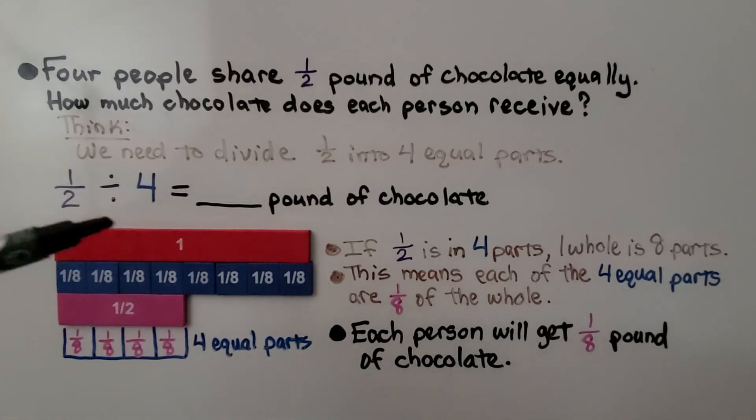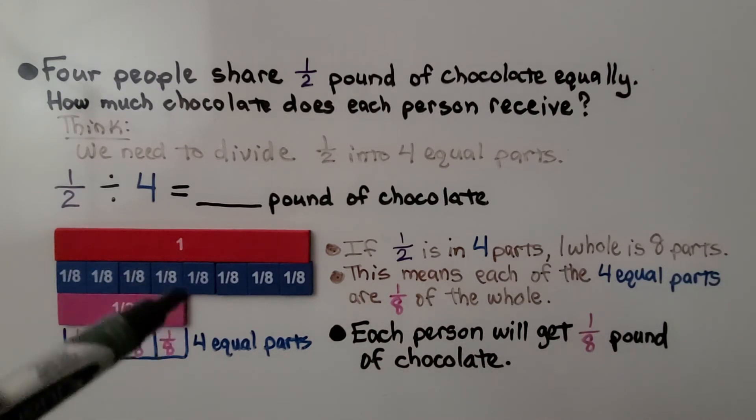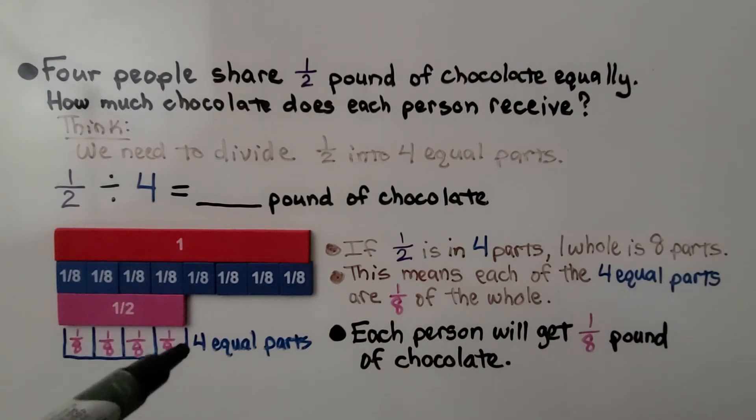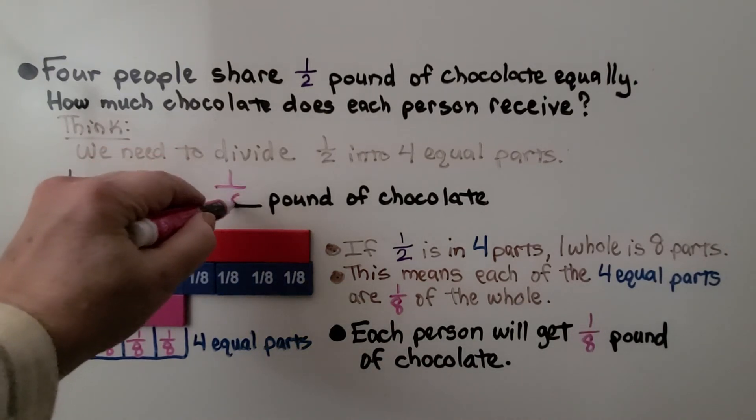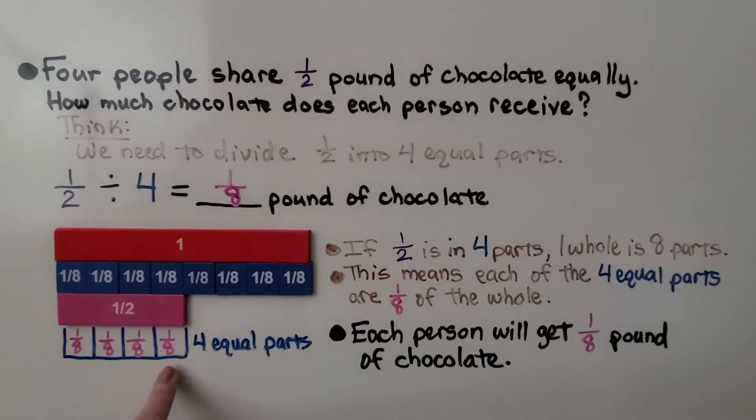So the red bar is one whole, and if half is in four parts, one whole would be eight parts because we would have four parts here and four parts here. So we know it's in eight parts. This means each of the four equal parts is one-eighth of the whole. This means that each person is going to get one-eighth pound of chocolate. They're each going to get one of these.